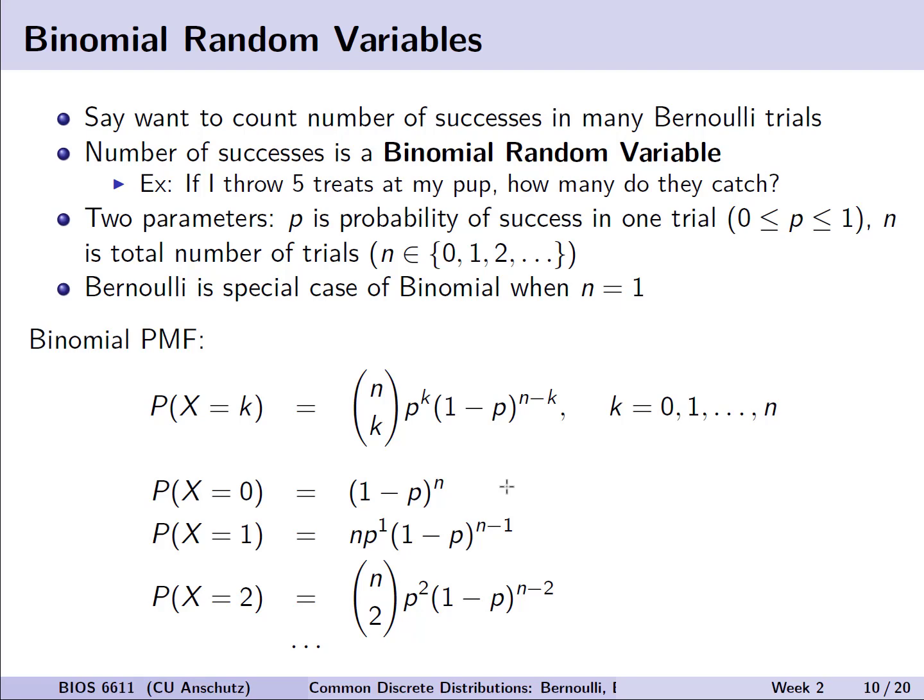For example, if I throw five treats at my pup, how many do they catch? In this case, we actually have two parameters. We have that value p we had before, that probability of success within one trial, and we still have this range of values from 0 up to 1 with the same meaning we had before.